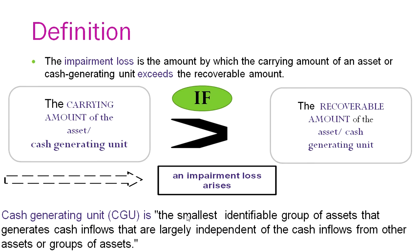The definition of impairment loss is the amount by which the carrying amount of an asset or cash generating unit exceeds the recoverable amount. So if the carrying amount of the asset is higher than the recoverable amount, then impairment loss arises. The carrying amount is the balance sheet value — cost less depreciation — and we will be covering the recoverable amount next.